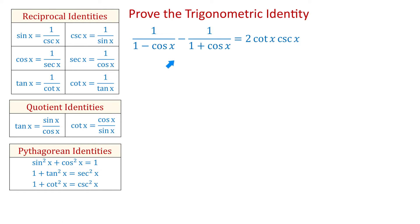On this side, we have two fractions, and to subtract them we need the least common denominator. The least common denominator is the product of 1 minus cosine of x and 1 plus cosine of x.